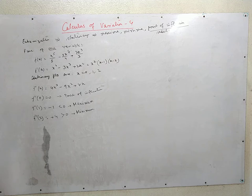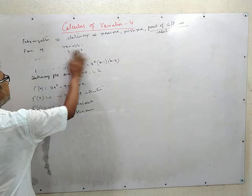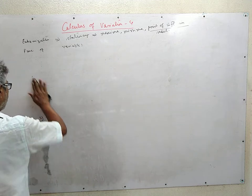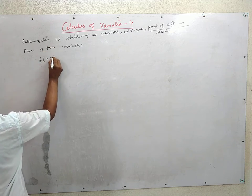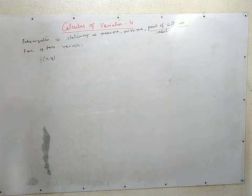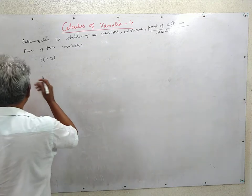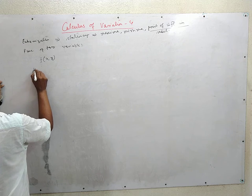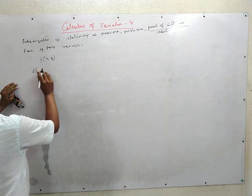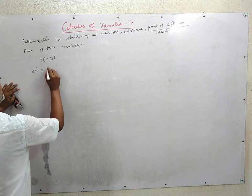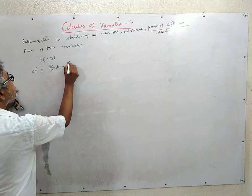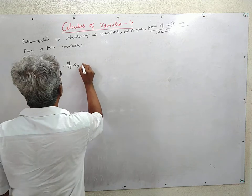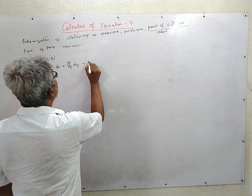Now consider a function of two variables, f(x, y). Our aim is again to find the stationary values and the nature of the stationary values. We write df = (∂f/∂x)dx + (∂f/∂y)dy as the first-order term, then we continue to the second-order terms plus higher order terms.